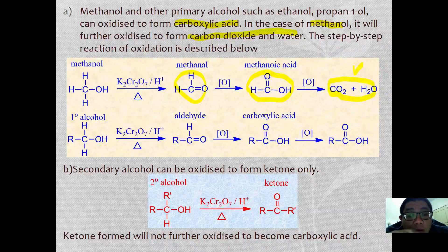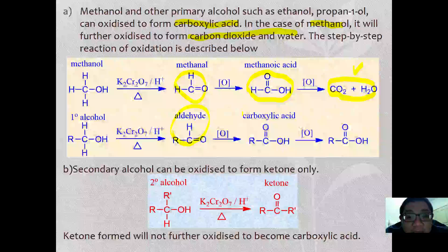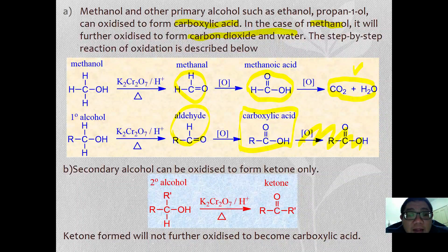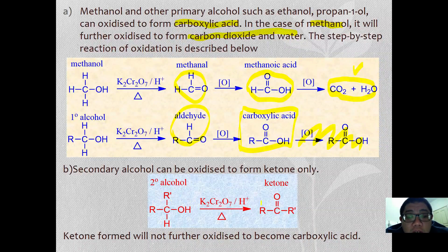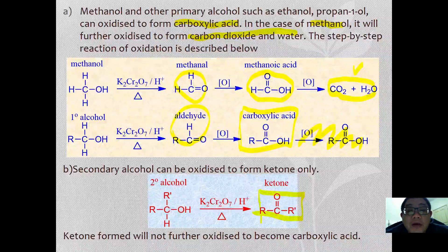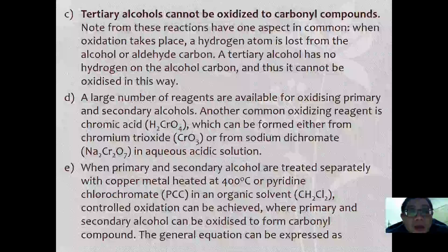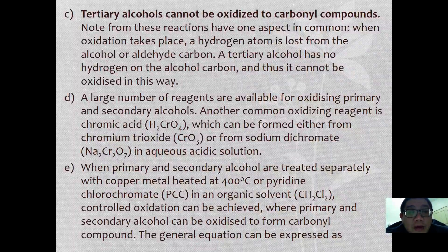For primary alcohol, oxidation forms an aldehyde which further oxidizes to become a carboxylic acid. For secondary alcohol, whether you use KMnO₄ or K₂Cr₂O₇, you form a ketone at the end, and ketone will not be further oxidized to carboxylic acid. Tertiary alcohol cannot be oxidized to carbon compounds because when oxidation takes place, a hydrogen on the carbon bearing OH is lost, and tertiary alcohol has no such hydrogen.